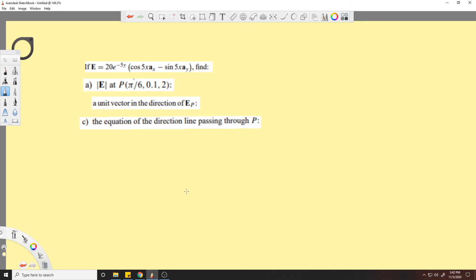Hey, alright. I have an electric field with some trig functions in it and some stuff. We have part A, we want to know the magnitude of the electric field at some point. This is part B: a unit direction unit vector and an equation of a line.